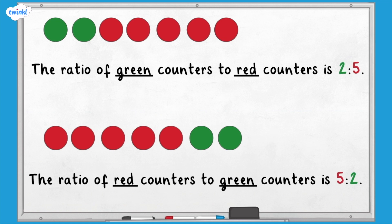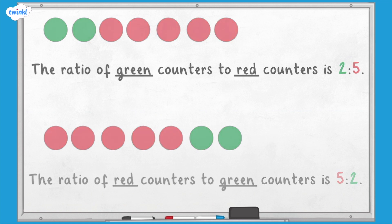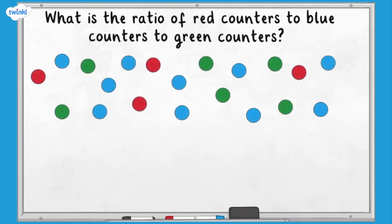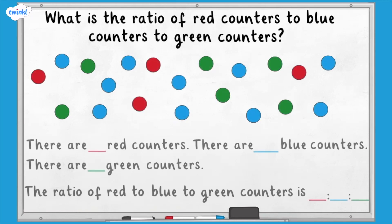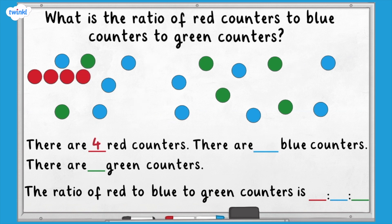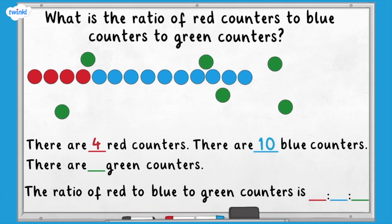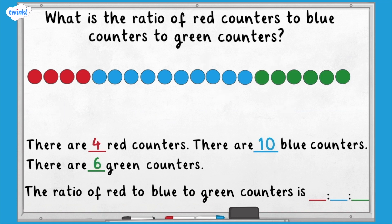Sometimes we compare more than two parts using ratio. For example, what is the ratio of red to blue to green counters here? We can count the counters of each colour, making sure to keep the numbers in the same order as in the question. There are four red counters, ten blue counters, and six green counters. The ratio of red to blue to green counters is four to ten to six.